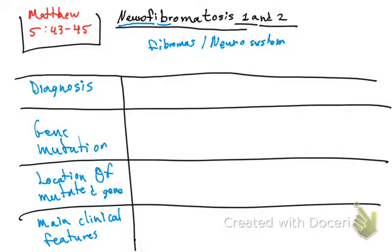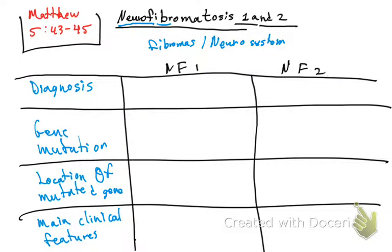So neurofibromatosis — we have two types: neurofibromatosis type 1 and neurofibromatosis type 2. We're going to do a versus comparison of each one.